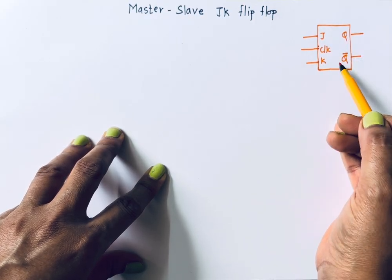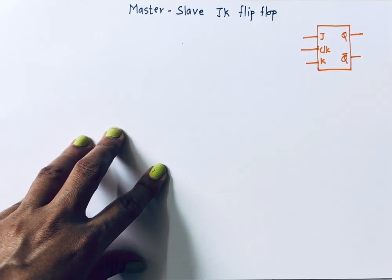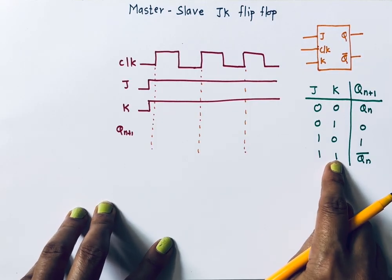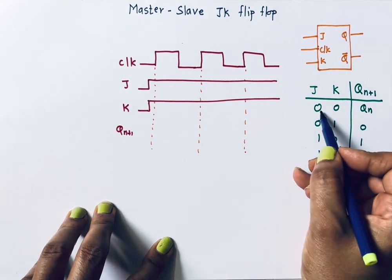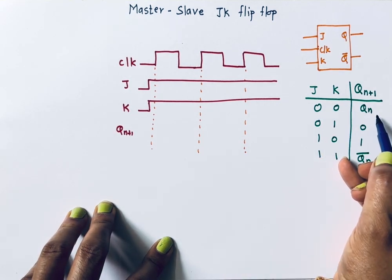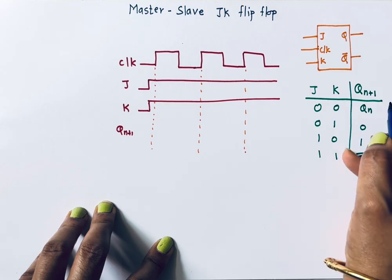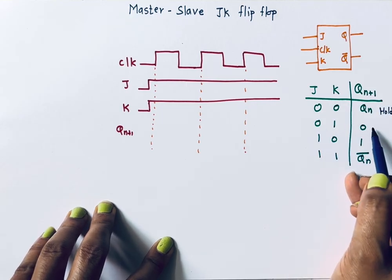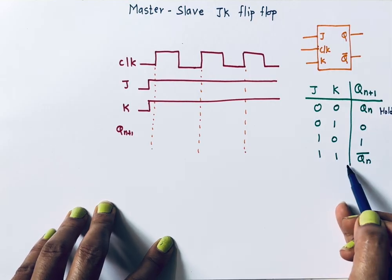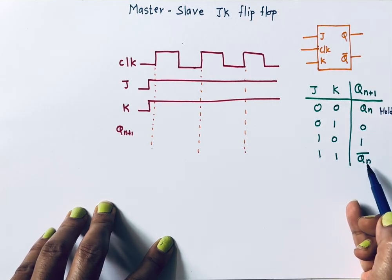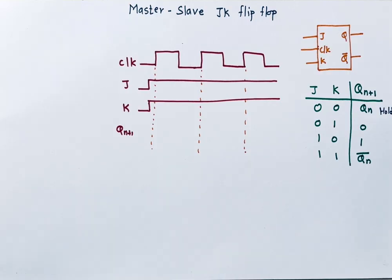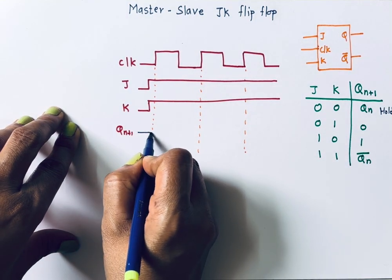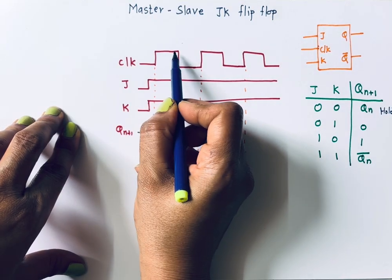This is the truth table of the JK flip-flop. When both inputs are zero, the next state output is the same as the previous state output — we can call it the hold state. For zero-one it resets, for one-zero it sets, and for one-one the next state output is the complement of the present state output.